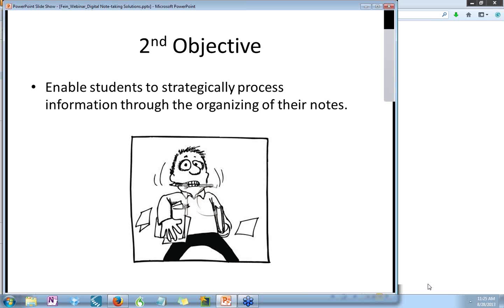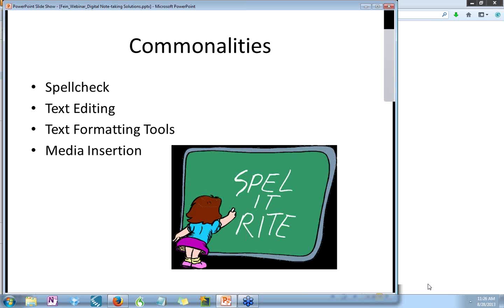Let's talk about our second objective. How does digital note taking enable students to strategically process information through the organizing of their notes? The process of reviewing and revising notes enables students to identify gaps in information and areas of confusion. In addition, they are able to engage in critical thinking as they establish relationships and synthesize the information. However, key to being able to engage in this process is having a safe place to save the actual notes. And that's where in the cloud storage and synchronization across devices supports our ability to meet this important objective.